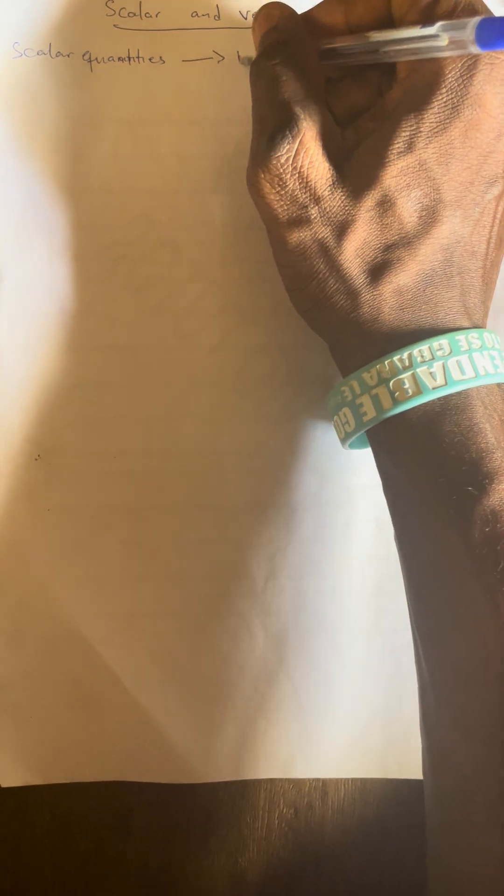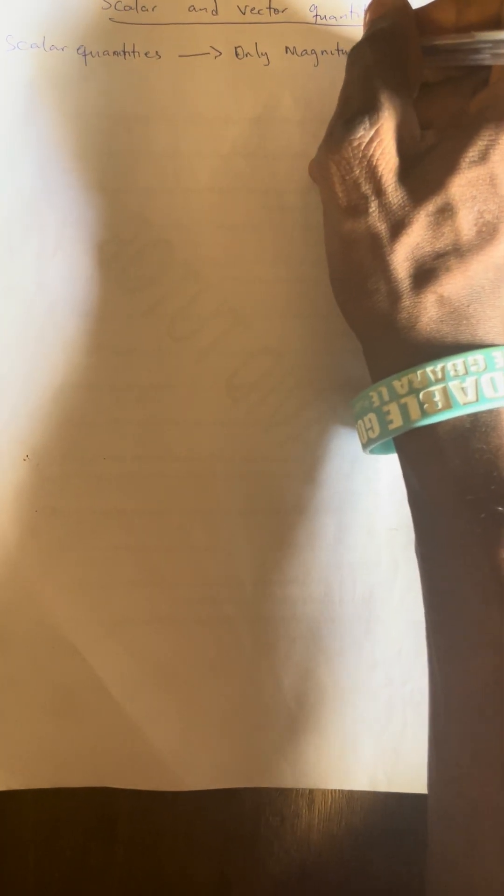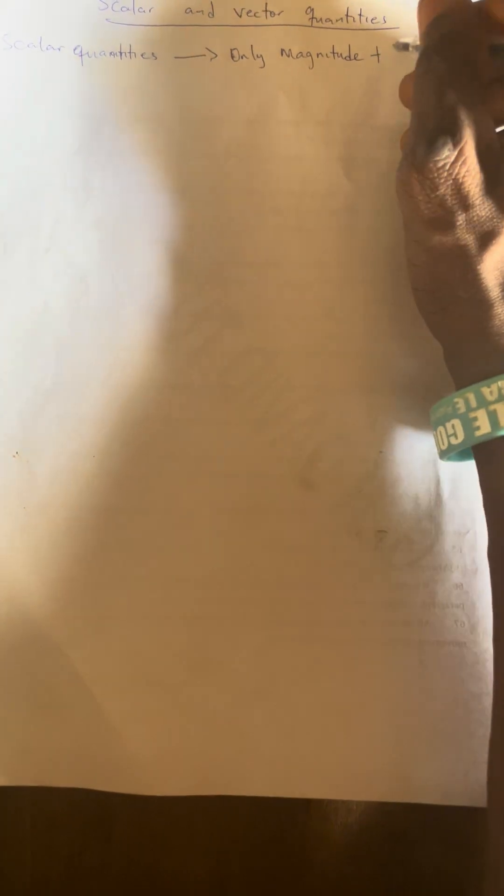I am known as Jen David. Today we'll be looking at scalar and vector quantities. Scalar quantities are quantities that have only magnitude — only magnitude with no direction, or only magnitude with no specific direction.